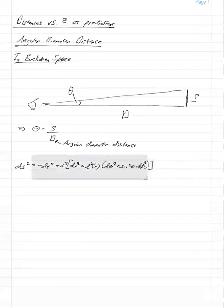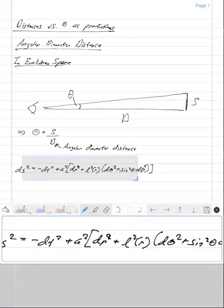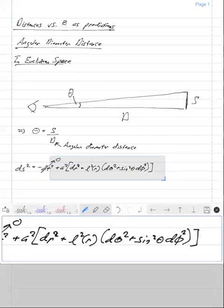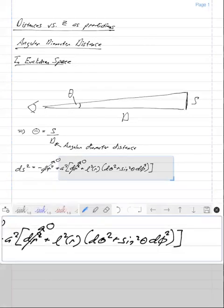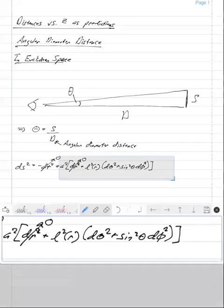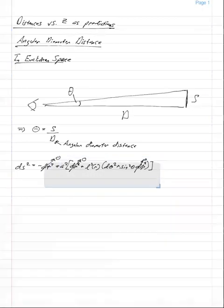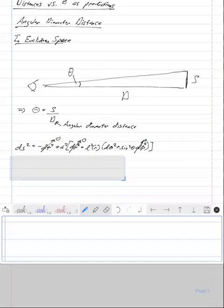Since we're dealing with an angular diameter distance, we're going to consider at a constant time, so dt is zero, and this object has no extent in the dr direction. It's only in the d theta or d phi direction. So dr is zero. And we'll just simplify our coordinate system so that this object is oriented in the theta direction, not the phi direction. So that's zero. All right.